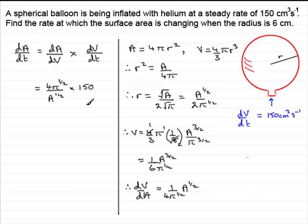So you can see this is still quite involved. And then we can tidy this up. We've got 4 times 150. So that's going to be 600. So we've got 600 pi to the half all over A to the half.